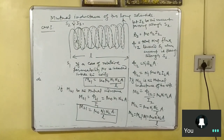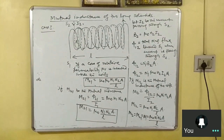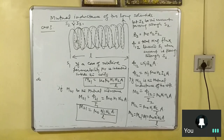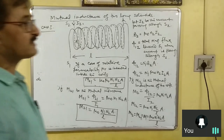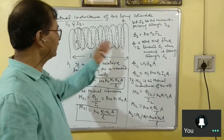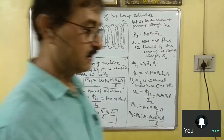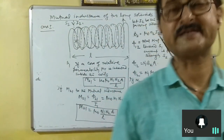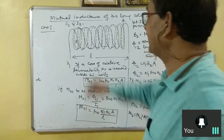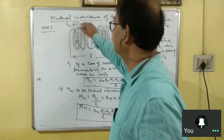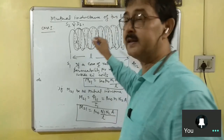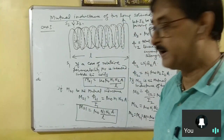Comparing M12 and M21, both are exactly the same. So whether you are passing current through S1 or S2, in both cases the mutual inductance will remain the same. This means mutual inductance does not depend on the current flowing through the coils. The final result is M12 = M21 = M = μ₀·N1·N2·A/L.